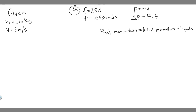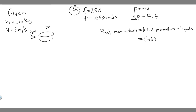Let's think about this problem visually. Here's our hockey puck with a force of 25 newtons directed to the right. Now let's set up the calculation. The initial momentum is mass times velocity: 0.16 times 3. The impulse is force times time: 25 times 0.05. And the final momentum is 0.16 times v, where v is the unknown final velocity we want to find.